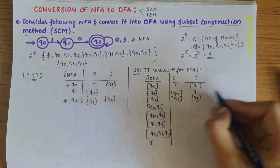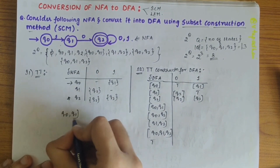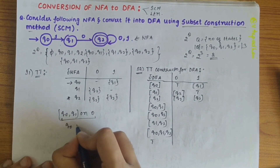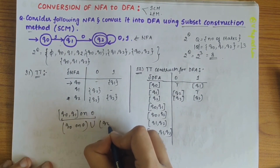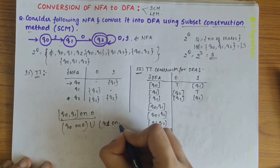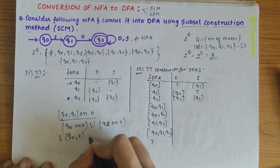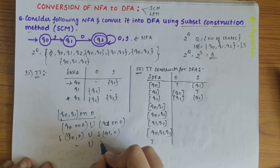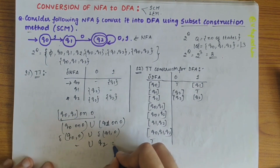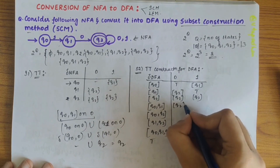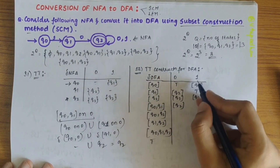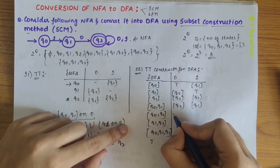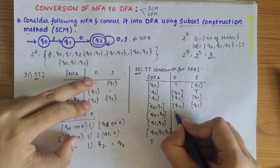For the combined state Q0,Q1 on 0: this is Q0-on-0 union Q1-on-0, which is ∅ union Q2 = Q2. For Q0,Q1 on 1: Q0-on-1 union Q1-on-1 = Q1 union ∅ = Q1. So Q0,Q1 on 0 gives [Q2] and Q0,Q1 on 1 gives [Q1].